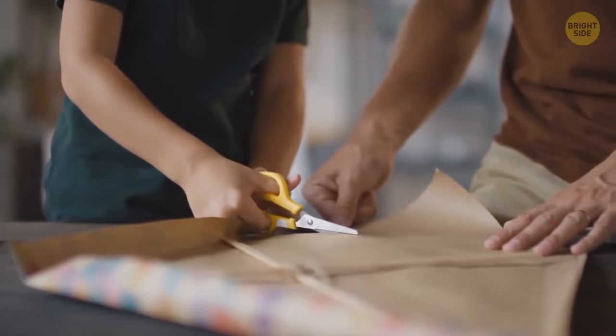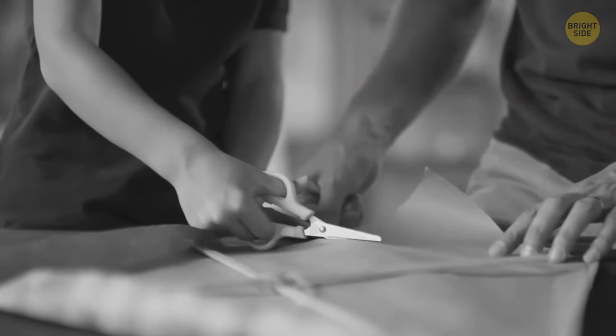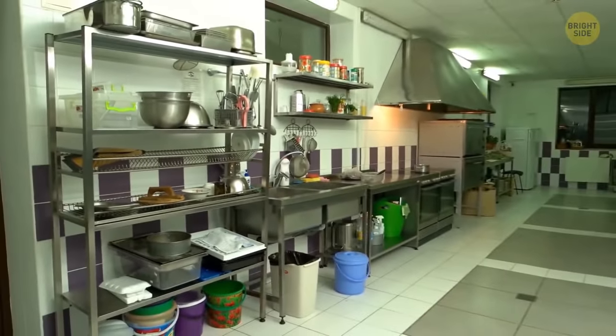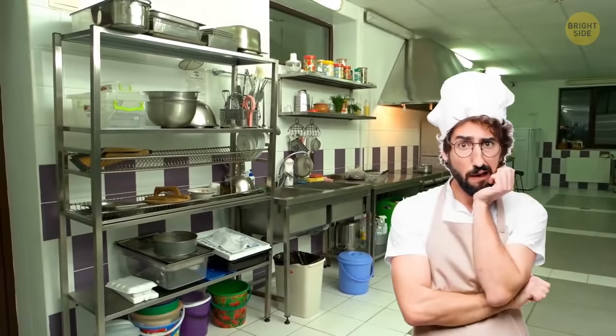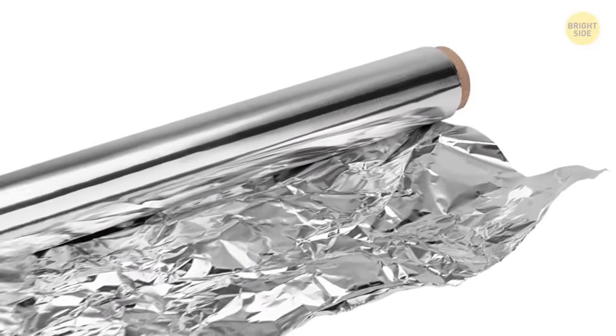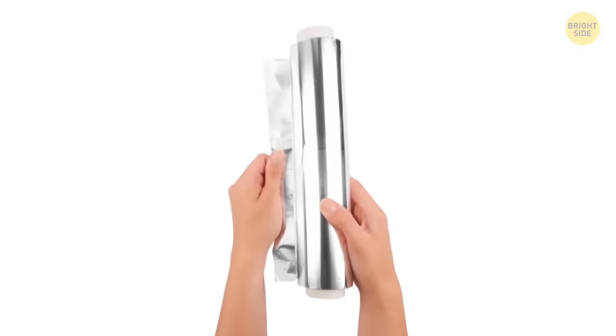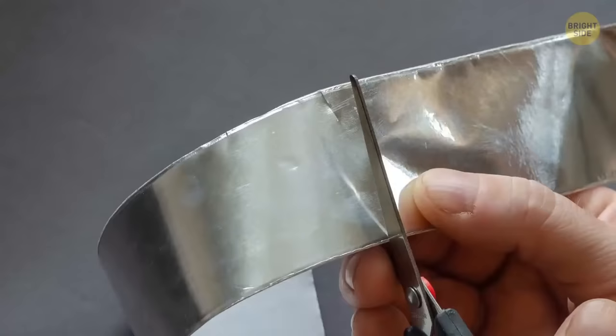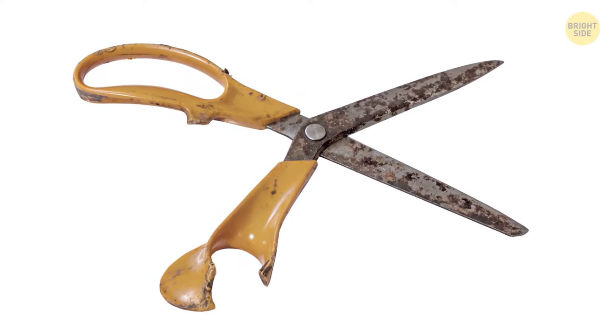Any pair of scissors will go blunt sooner or later, but don't let that stop you. There's a product in your kitchen that can help bring them back to life fast. Aluminum foil isn't just for leftover lasagna. Fold a sheet of it into quarters and start cutting. Cutting through the foil will sharpen those scissors right up, but not if they're too blunt. Rescue them while there's still time.